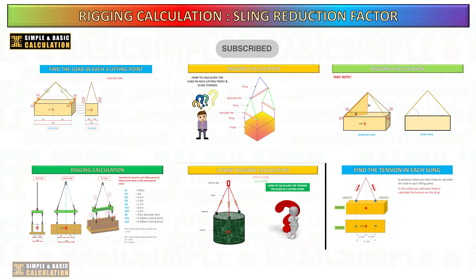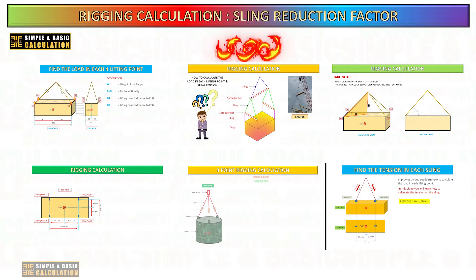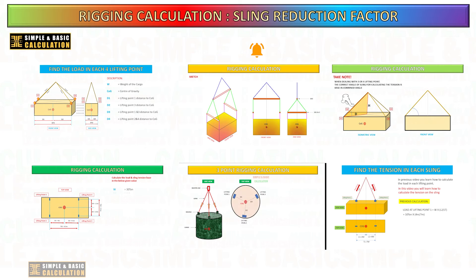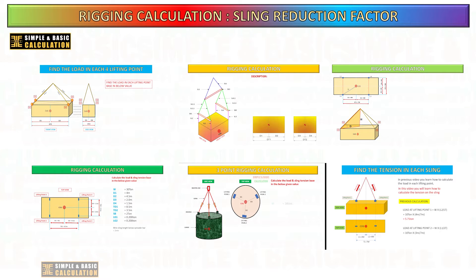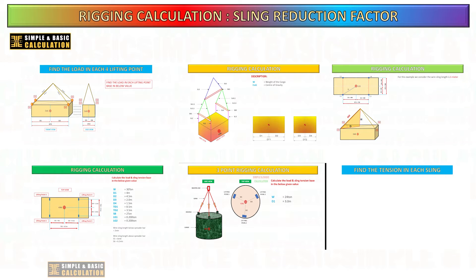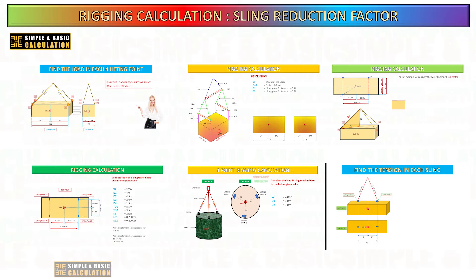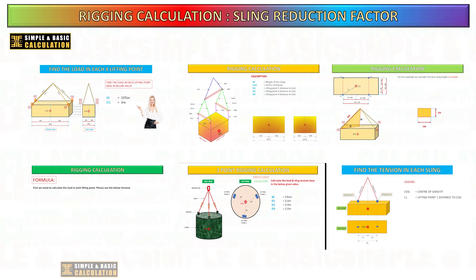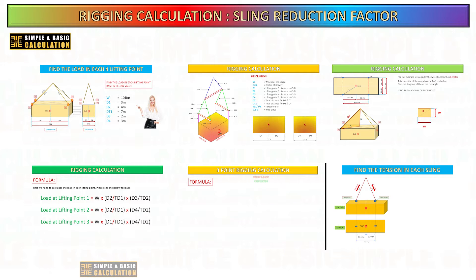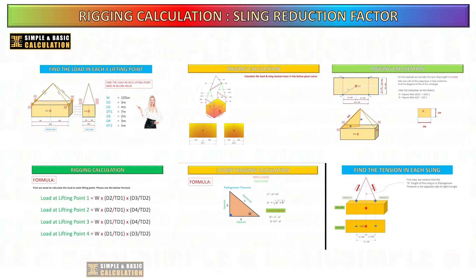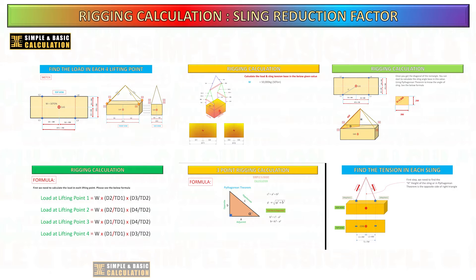In our previous video, we comprehensively addressed the many components of calculating forces and tension associated with rigging during hoisting of load. I have gone over the computation of sling tension for two lifting points, four lifting points, combined angle of sling, and the use of a spreader bar or without it for lifting. Here are some key highlights from the previous video. If you haven't watched it yet, I will include the video link in the description.